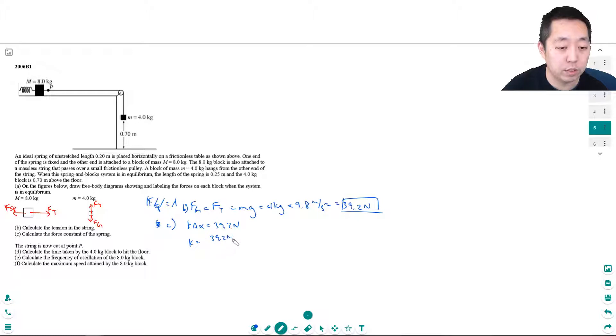Delta x is how much it stretched. It stretched 0.05 meters because it went from 0.2 meters to 0.25 meters, so that's like multiplying it by 20. I get 784 newtons per meter.